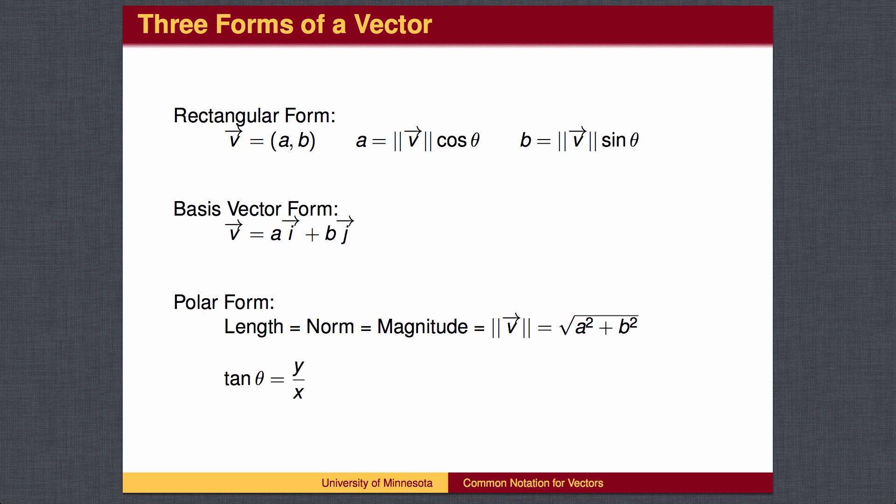Now, instead of writing a vector as an ordered pair, we can write it as a sum of the vertical and horizontal components. We can scale the vectors i and j to any length and achieve any vector by a sum. The basis vector form of a vector is merely the rectangular form rewritten as a sum rather than as an ordered pair. It is common to say that the basis form of a vector is expressed as a linear combination of i and j.